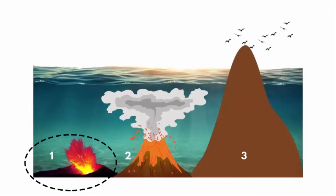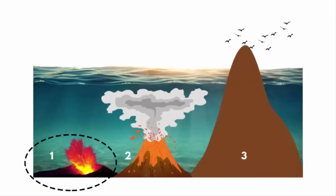the sea mount's elevation grows higher, eventually breaking the surface of the water. The top of the volcano becomes an oceanic island. So this is how a volcanic island or a sea mount is formed.